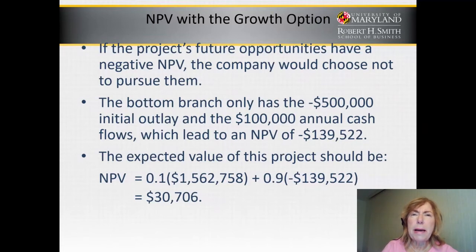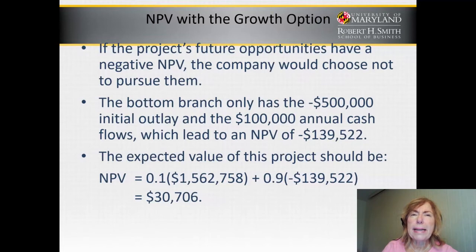Therefore, the expected value of this project would be $30,706, obtained by multiplying the 10% probability by $1,562,795 and adding it to the product of the 90% probability multiplied by negative $139,522.